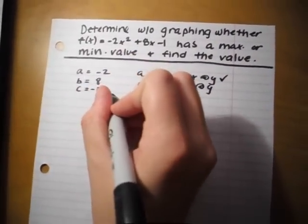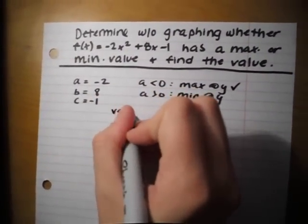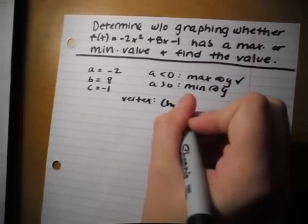First you find the vertex. Vertex is h comma k.